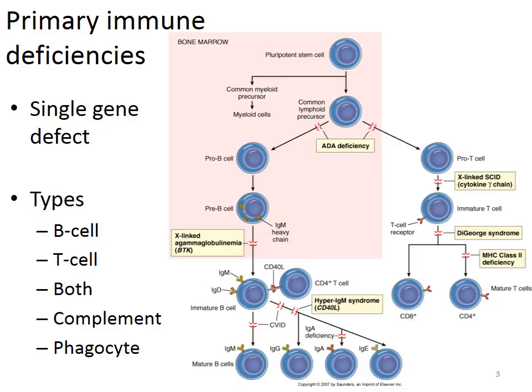In this mechanistic overview tree we're looking at the primary immune deficiencies. These tend to be single gene defects. We're going to look at three out of the five listed: B cell deficiencies, T cell deficiencies, and when both occur together in severe combined immunodeficiency disease, otherwise known as SCID or ADA deficiency. Complement and phagocytes can also have single gene defects, but we won't have time to cover those.